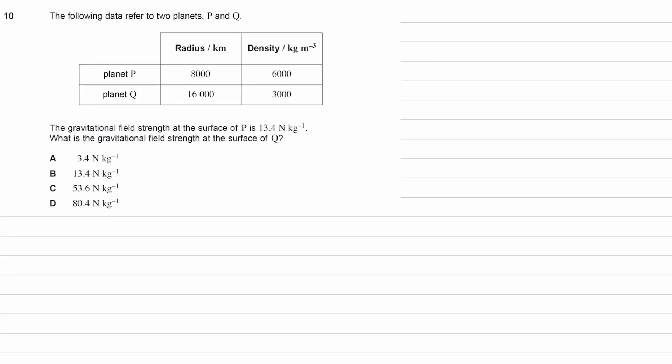The following data refers to two planets, P and Q. We have radius, density, here are the two planets P and Q. The gravitational field strength at the surface of P is this, and the gravitational field strength at the surface of Q is what we're trying to work out.